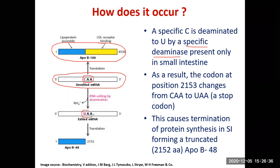The resulting codon UAA is a stop codon. So translation begins as usual from the start codon, but because there is now a stop codon at position 2153 in the small intestine, translation stops there, generating a truncated protein which is ApoB48. The first 2152 amino acids make ApoB48, because codon number 2153 is a stop codon. Thus, the presence of this deaminase in the small intestine is responsible for this RNA editing.